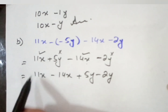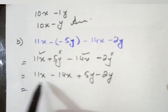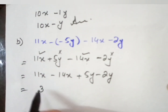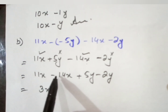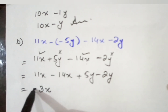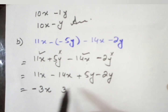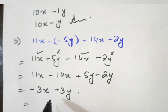Again we have opposite signs — plus and minus — so the terms will be subtracted: 14 minus 11 equals 3, and the greater term has the minus sign, so we write minus 3x. Then 5 minus 2 equals 3, and the greater term has a plus sign, so we write plus 3y. You can also factor from here if it is required by your book, otherwise this is the answer.